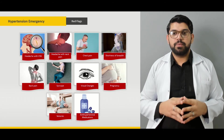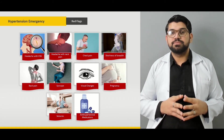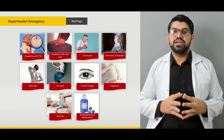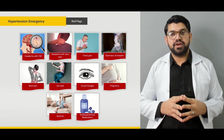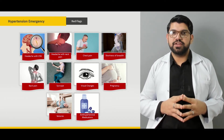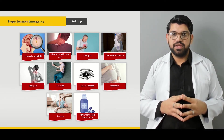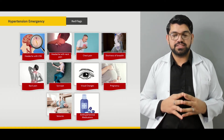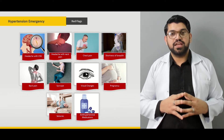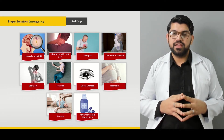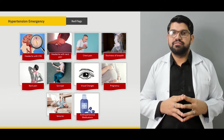Next we'll talk about some dangerous red flags that need to be understood and memorized by an emergency physician to look for in a patient with acute hypertensive emergency. These include several systems: the CNS system, the chest and cardiopulmonary system, the renal system, and the vascular system.